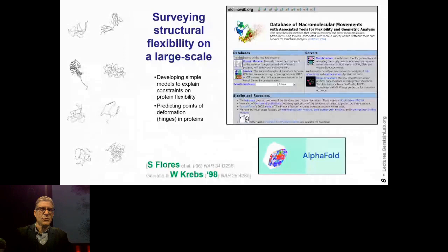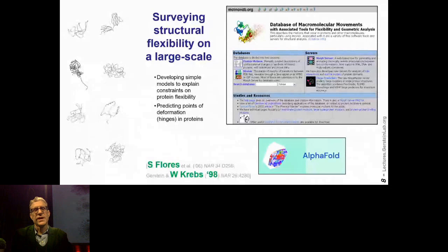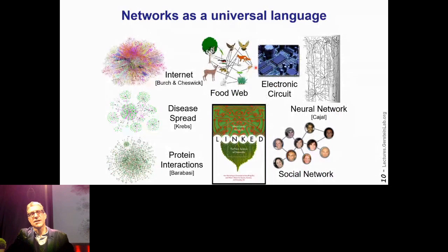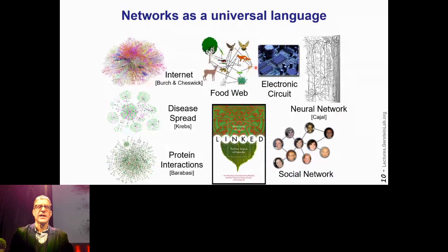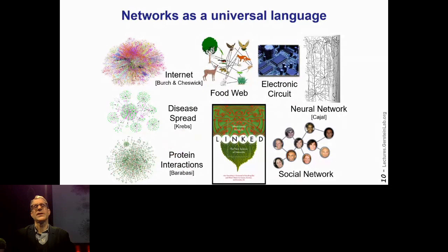I decided to transition out of structures. The first thing I got into was network science. Network science was, I think, an early version of data science — around 2000 or so. This is the idea that we can represent many things in network structures: neural networks, social networks, molecular networks, food webs, and so forth. A lot of these network ideas were really popularized by Barabasi, who is a brilliant network scientist, and his book 'Linked' talks about this unifying idea of networks.